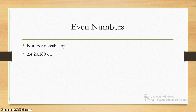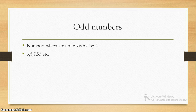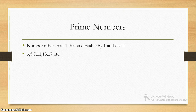Even numbers — you know this very well — are numbers which are divisible by 2, such as 2, 4, 20, 100 and so on. Odd numbers are numbers which are not divisible by 2. Prime numbers are numbers other than 1 that are divisible by only 1 and themselves, for example 3, 5, 7, 11, 13, 17 and so on.